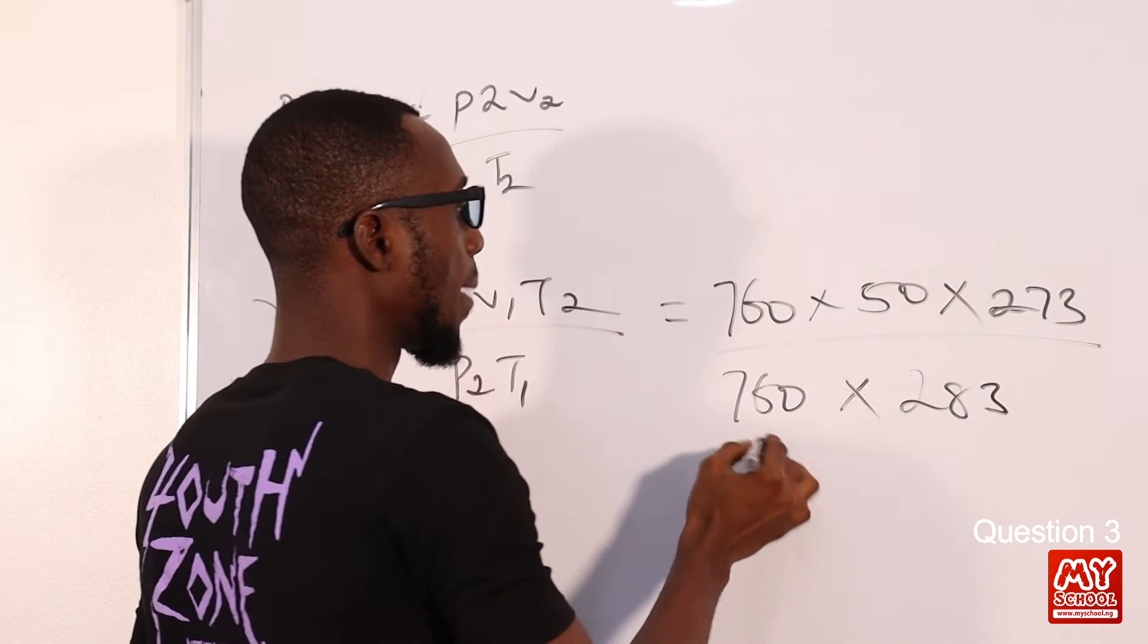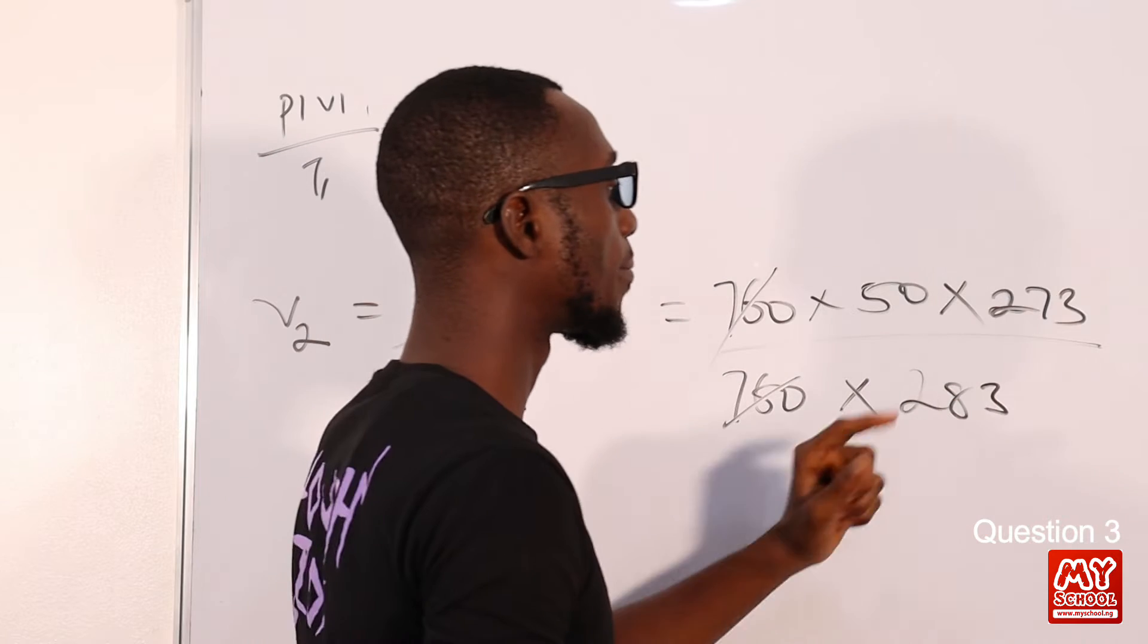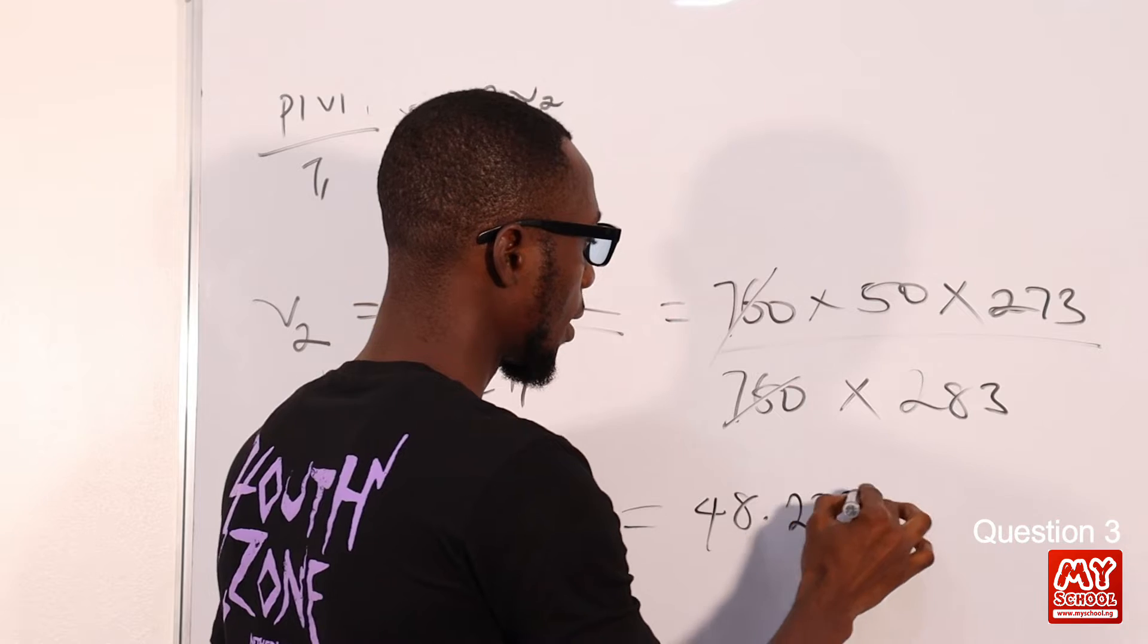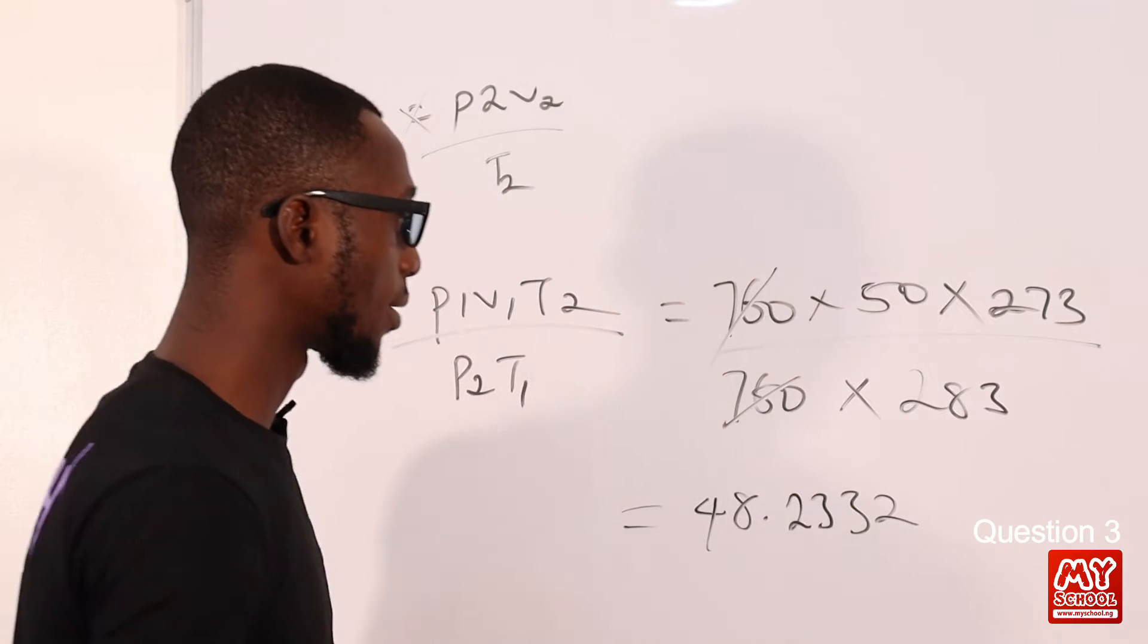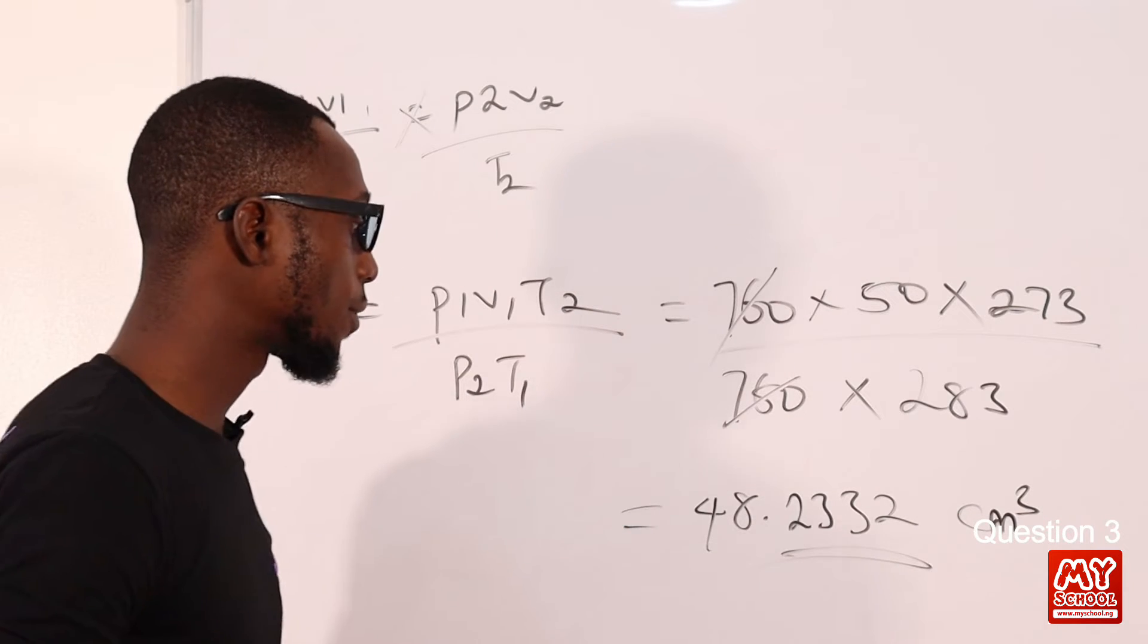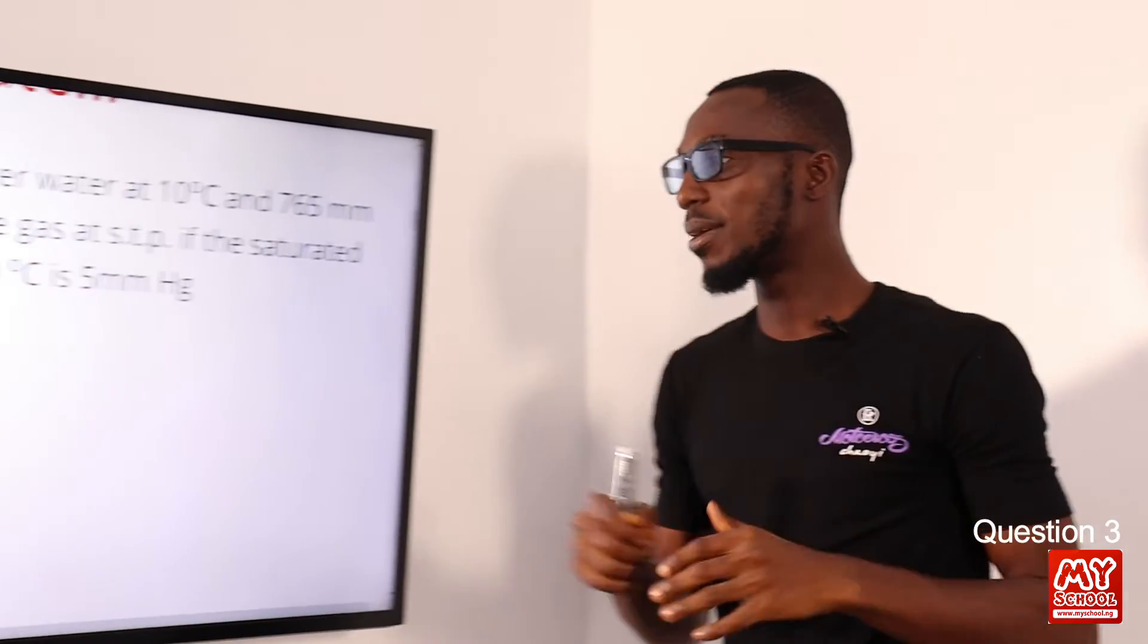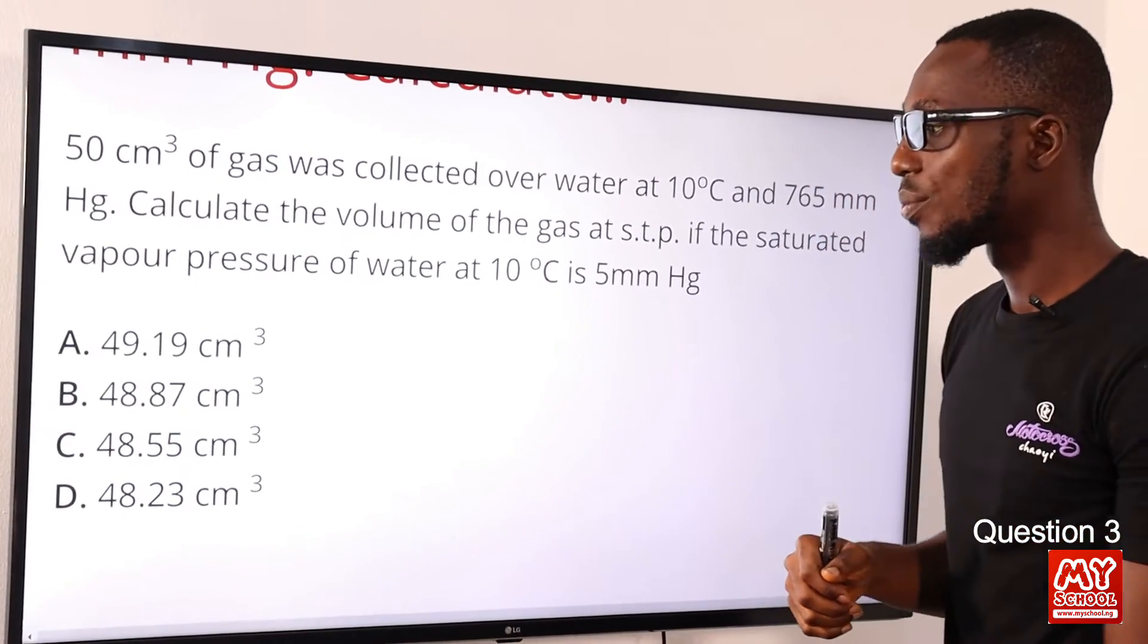Times T₁, the temperature given as 10°C, if we are moving to Kelvin scale that would be 10 plus 273, which makes 283. By the time we multiply this and divide it by this, what we should have is 48.23, thereabout. Remember we are working with volume, so that's centimeter cube. Let's go back to the screen and see—we can find that in option D. Option D is the correct option.